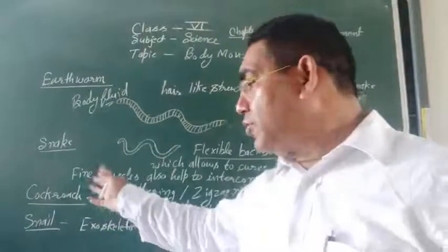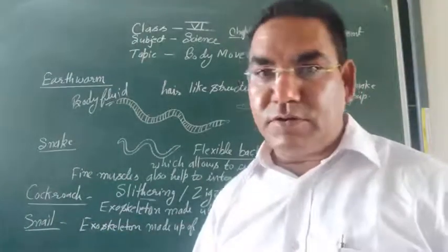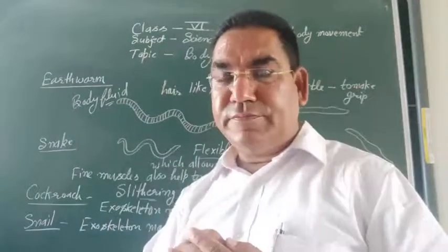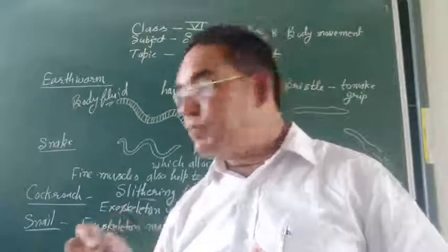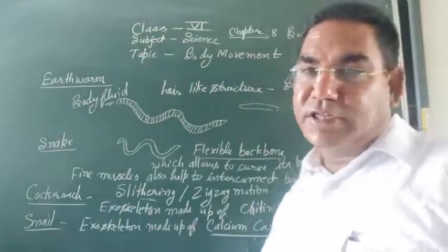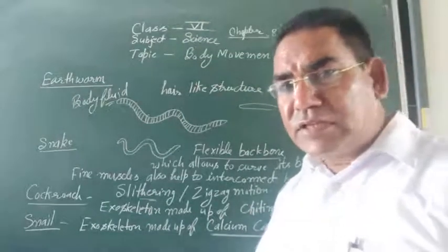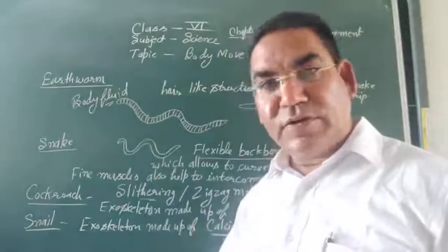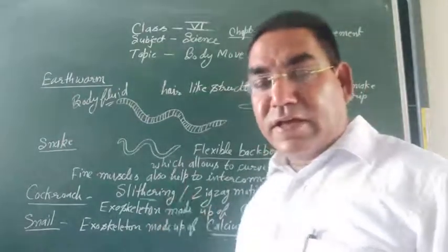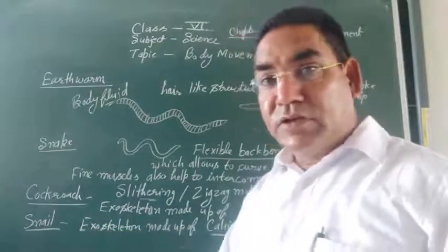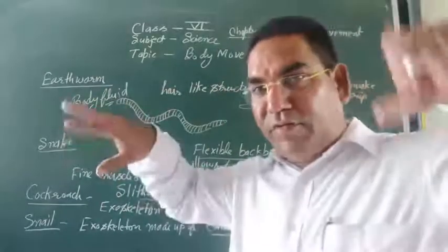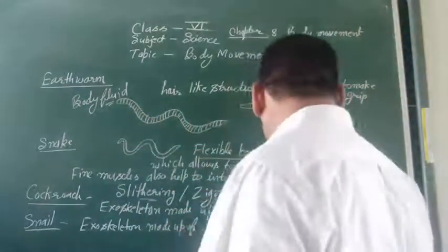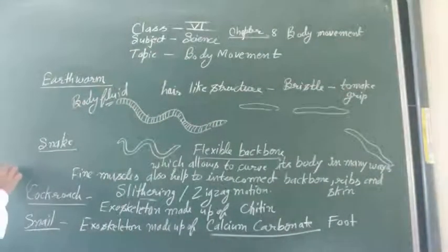Now, locomotion in cockroach. When you observe the cockroach, its body is hard and its exoskeleton is made up of chitin. This chitin is also present in the wings — the wings are also made up of chitin. Along with the exoskeleton, the cockroach has two pairs of wings for flying, like other insects.